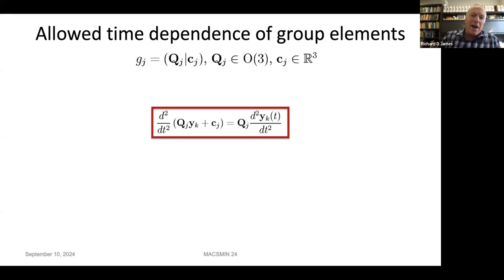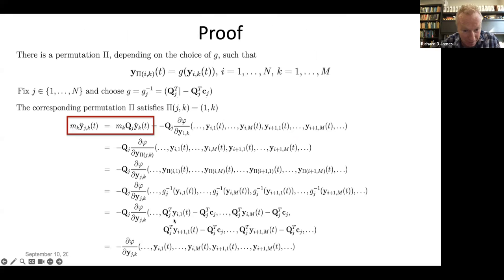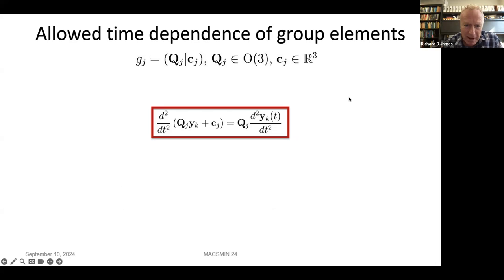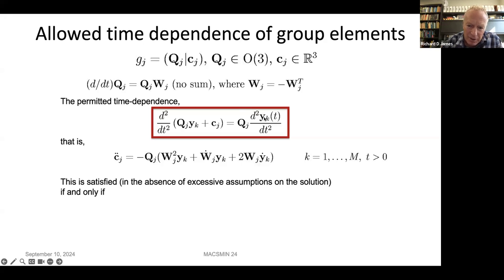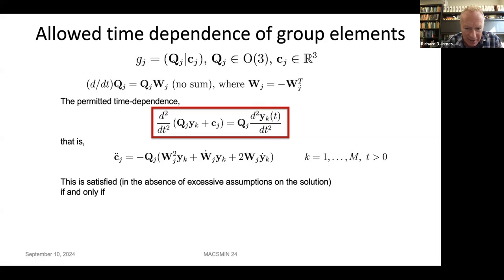One might want to allow Q to depend on time as well, but the proof shows that the only realistic way to ensure non-simulated atoms satisfy the equations of molecular dynamics is to require C̈ = 0 and W = 0, meaning Q is constant and the translation is affine in time. The proof just uses these group properties — both permutation invariance and the time dependence — and directly shows the non-simulated atoms satisfy the equations of molecular dynamics.